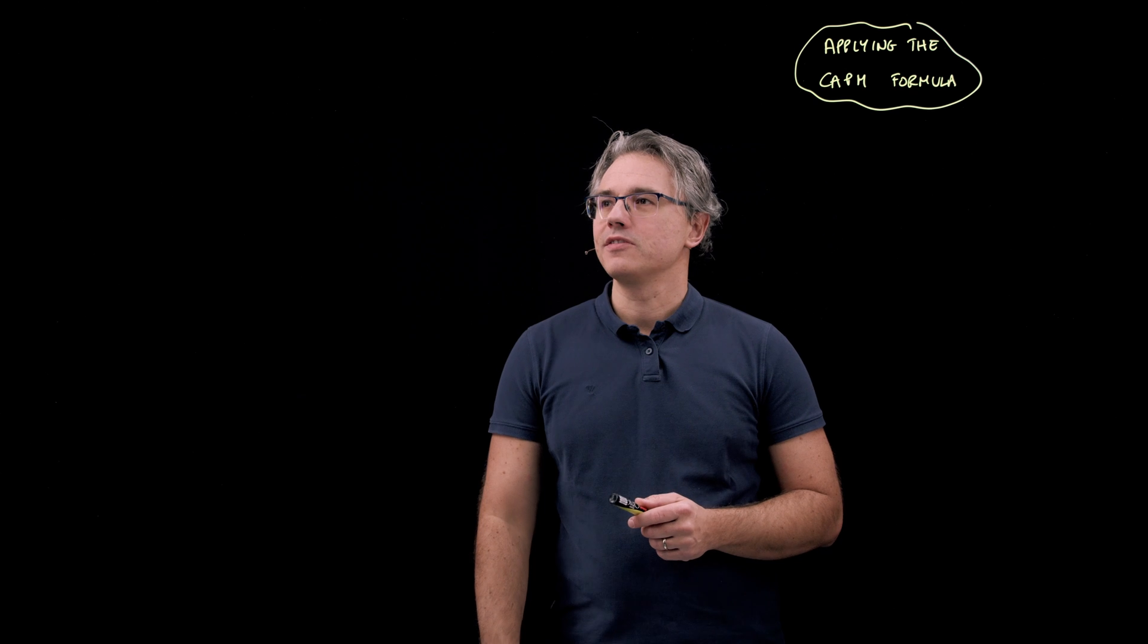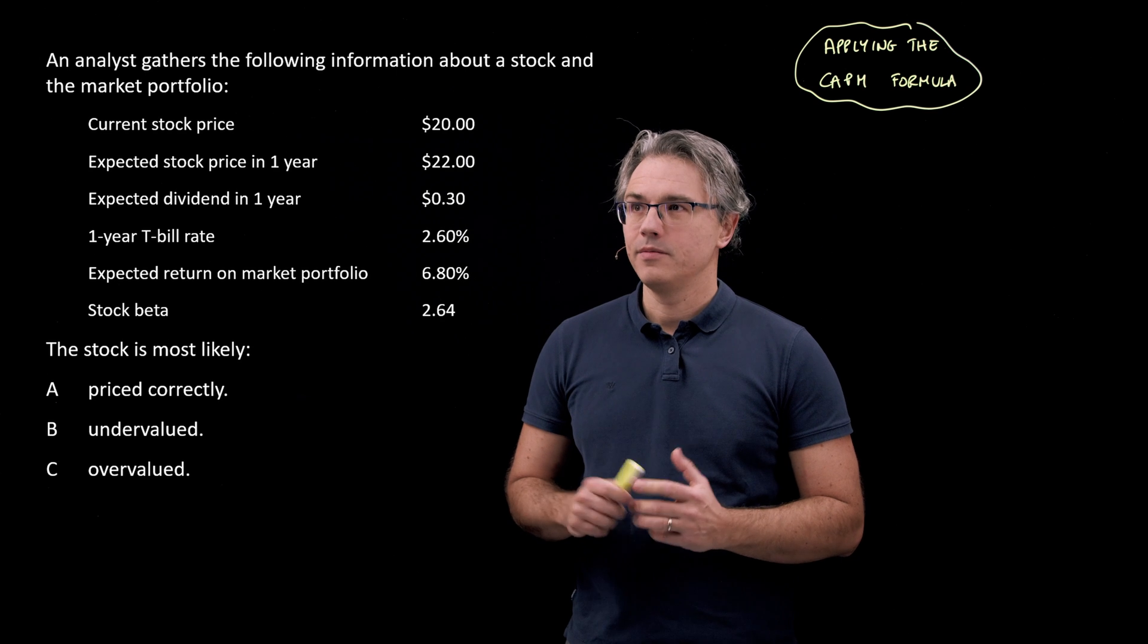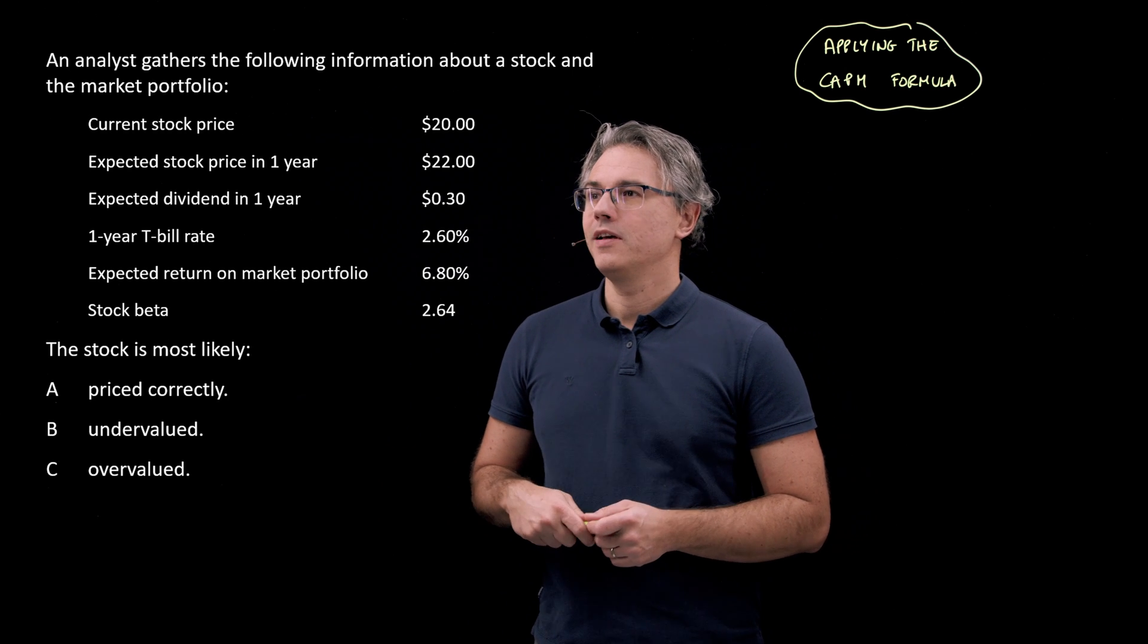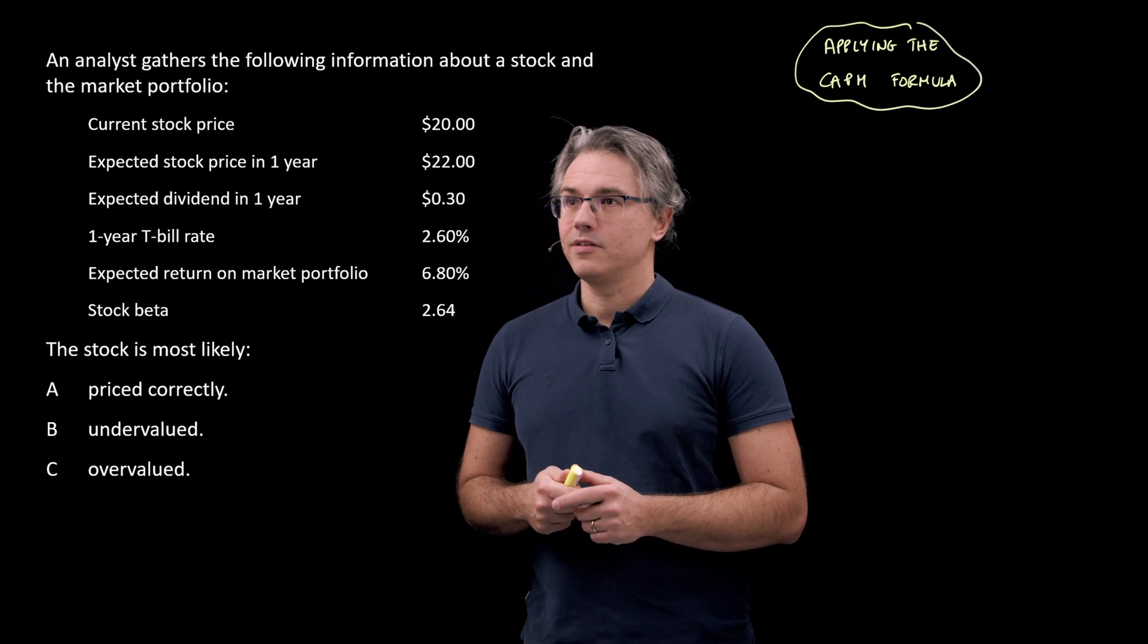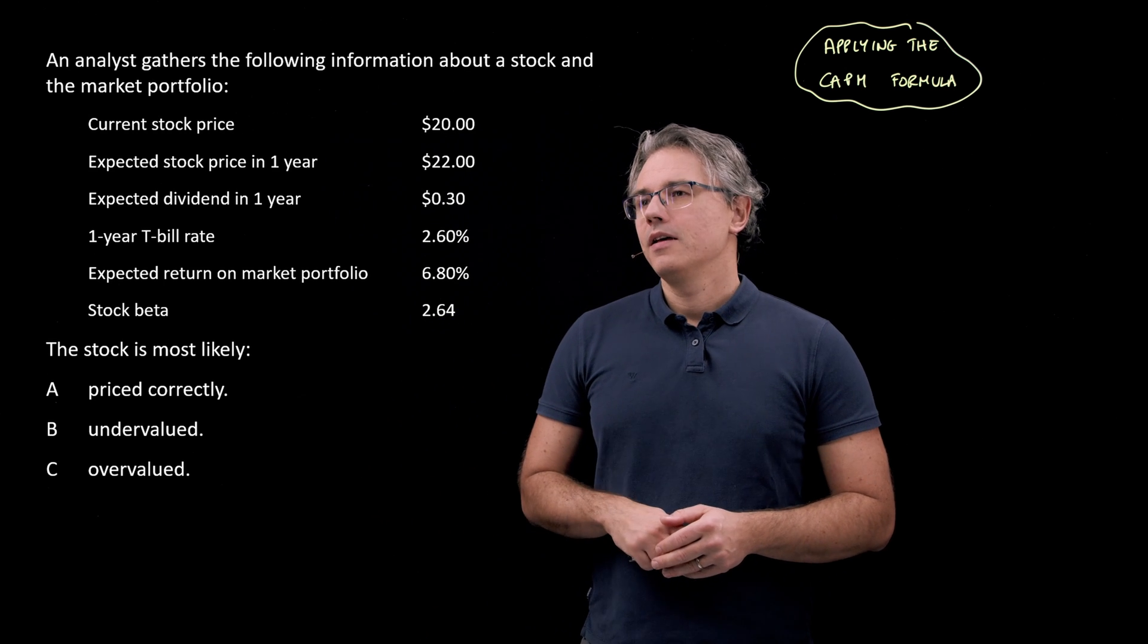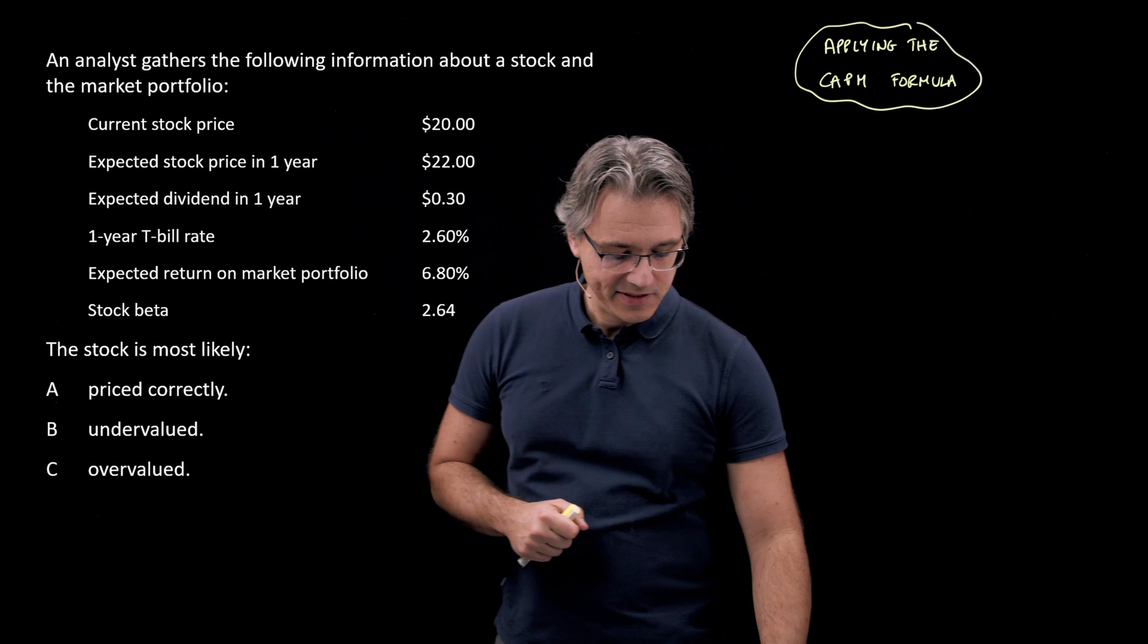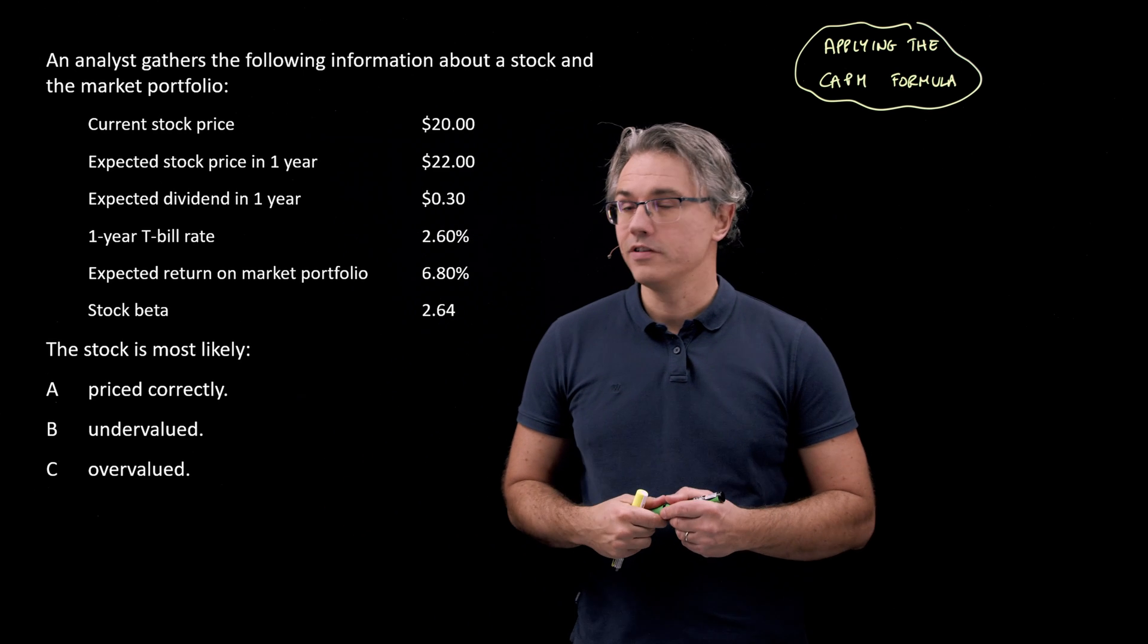So this is the question which I want us to have a go at. An analyst gathers the following information about a stock and the market portfolio. We've got a current stock price, the stock price expected in one year's time, the expected dividend in one year's time, and also information about the risk-free rate of return—that's the one year T-bill rate, the treasury bill rate of 2.6%—expected return on the market portfolio, as well as the stock's beta. And then we're supposed to simply state whether the stock is correctly priced or maybe under or overvalued.